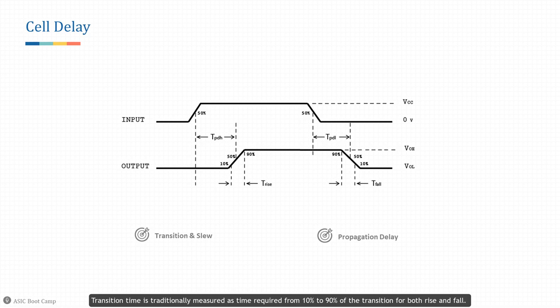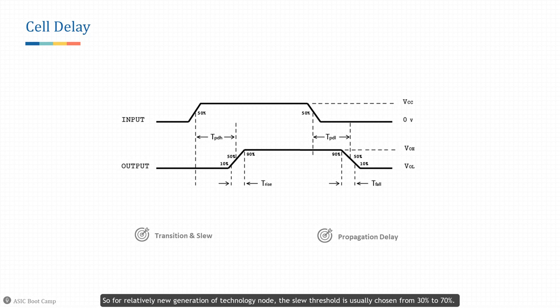Slew is the inverse of transition time — the larger the transition time, the slower the slew. However, the slew threshold is chosen to correspond to the linear portion of the transition waveform. For relatively new generation technology nodes, the slew threshold is usually chosen from 30% to 70%.